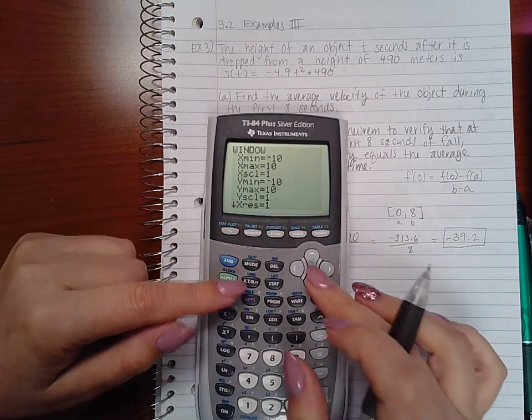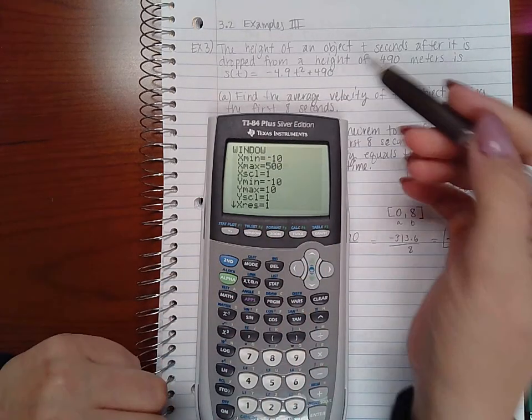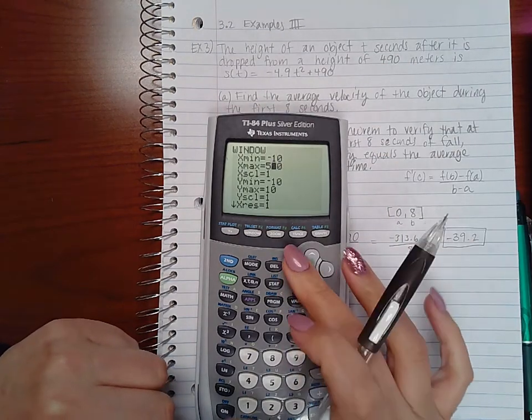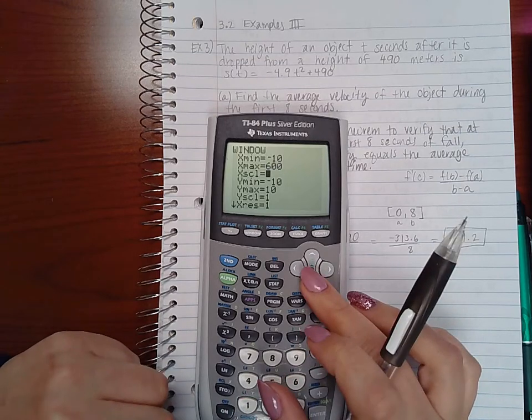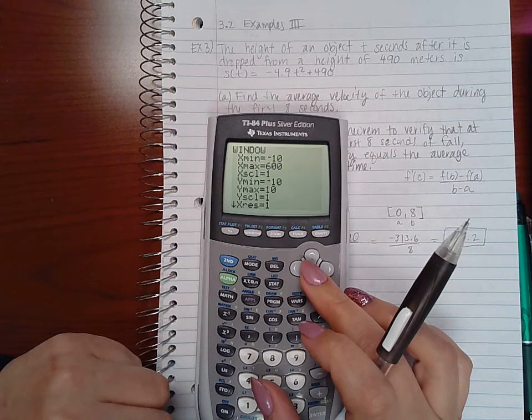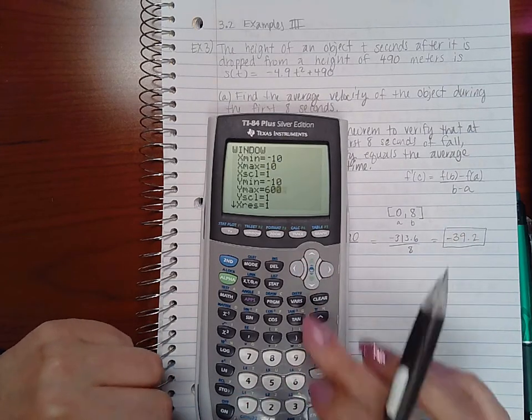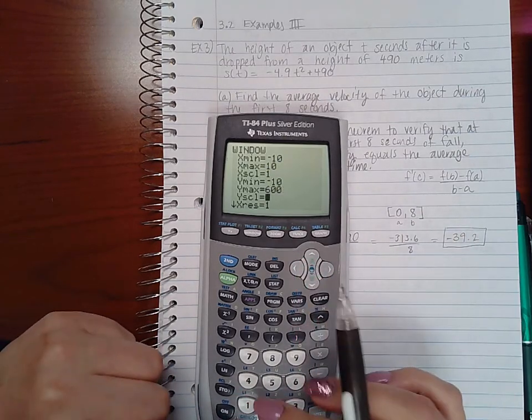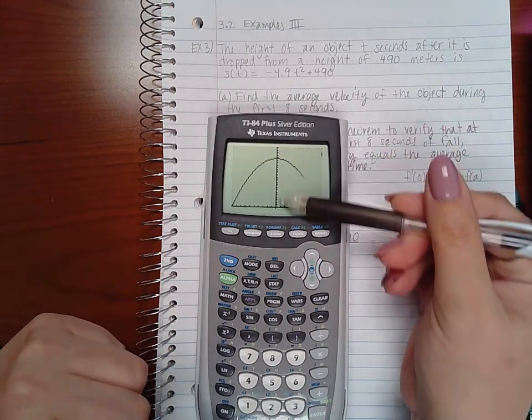Let me do my window. I want it to go up to at least 500 because it is starting at 490, maybe even higher than that, maybe even 600. My x values I will keep the same. We want the y value to go up to 600 and maybe even do our markers by 25s.